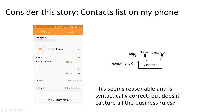So I'm envisioning a model where I have an entity called Contact with four attributes: contact ID, name, email, and home phone. I've tried it both ways — we don't have to have an email address and we don't have to have a phone number, so I think those are both optional attributes. At this point, this seems reasonable and syntactically correct, but I'm not quite sure this captures all of the business rules.